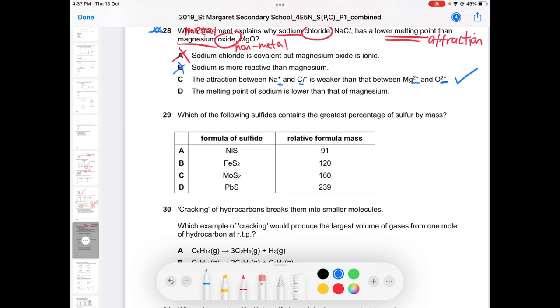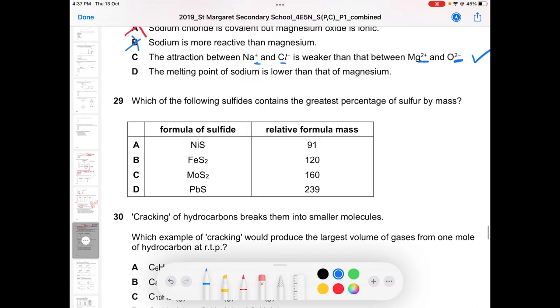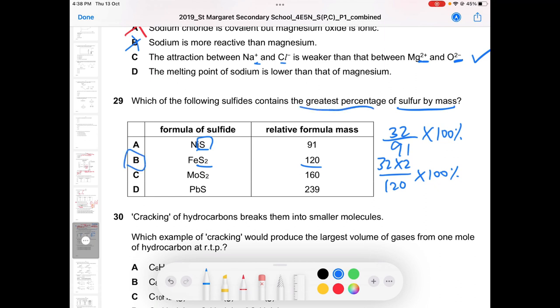Question 29, greatest percentage of sulfur by mass. This is why you need to calculate. For example, relative formula mass of FeS is 91. You need to ask yourself, I have one sulfur. So by mass, 32 is my sulfur. Out of that 91, what is the percentage? Then answer is B because I have two sulfur here. So 32 times 2 divided by 120 times 100%. You notice that option B is the answer because it's the greatest percentage. Go and calculate for all options and you can see for yourself.